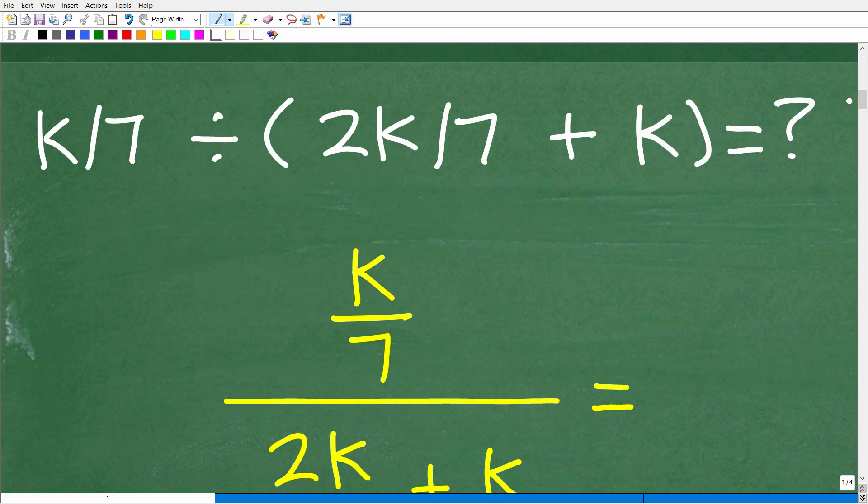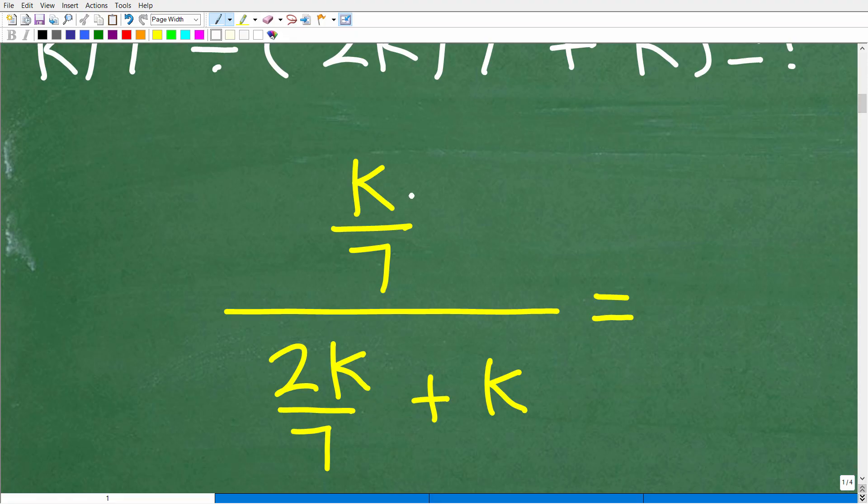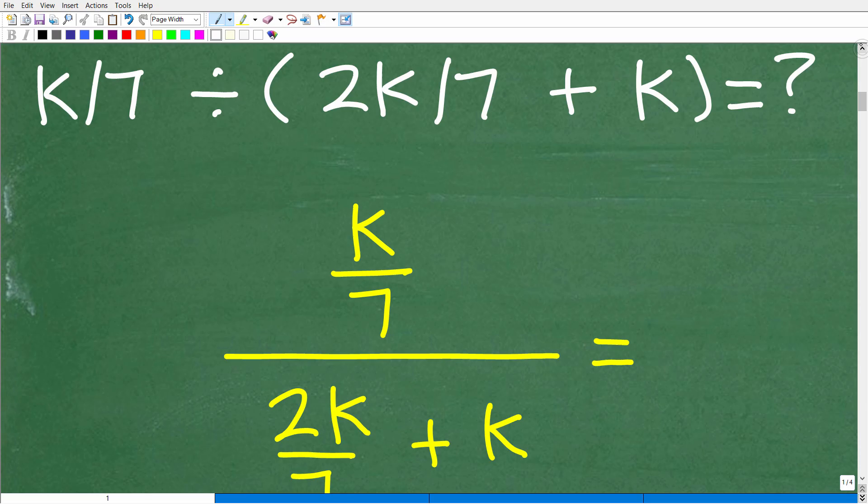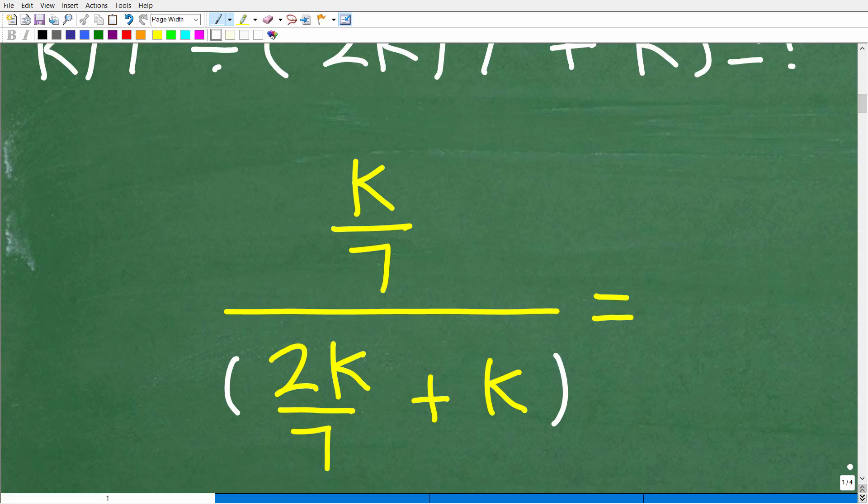Okay, so let's get into this problem. And the problem here is actually a complex fraction. Now I wrote it in this manner, k over 7 divided by parentheses 2k divided by 7 plus k in parentheses. But really, I wanted to write the problem this way. So this is the same problem, k over 7 divided by 2k over 7 plus k. So first thing that you want to recognize is that if I gave you the problem in this format, it means the same thing as this.